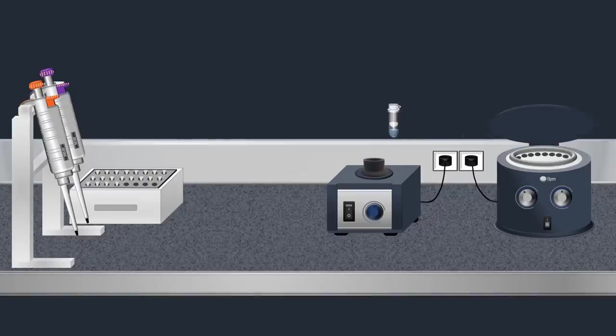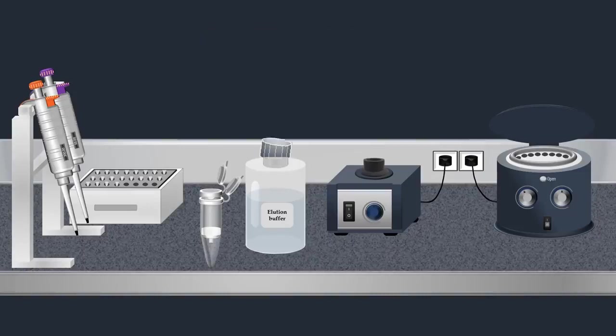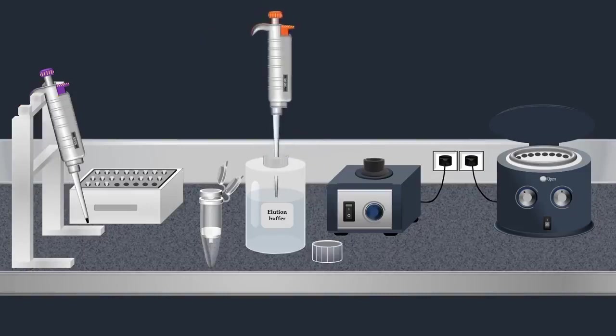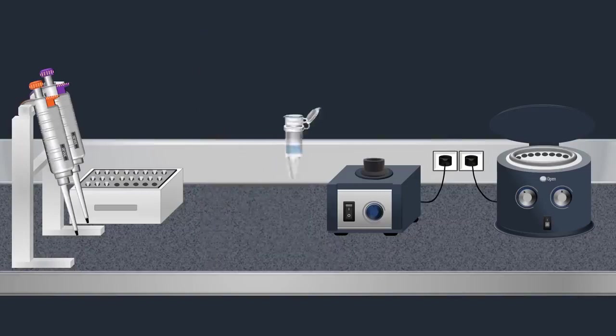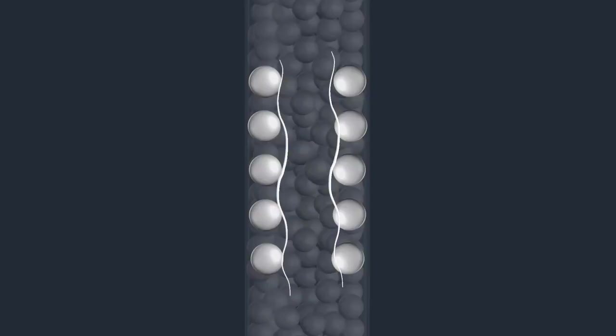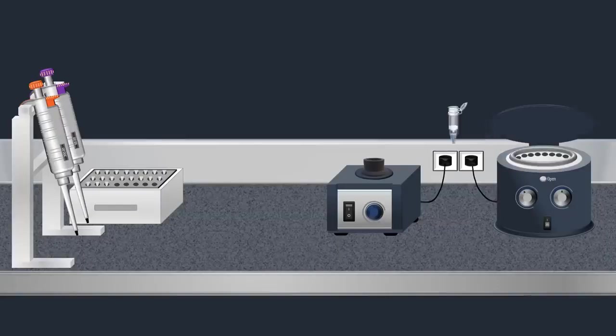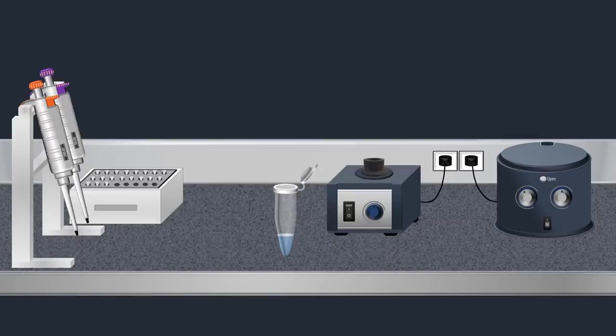Once the sample is washed, the column is placed in a clean microcentrifuge tube and an elution buffer is added. Then, centrifugation is carried out, forcing the elution buffer through the membrane. The elution buffer removes the viral RNA from the spin column, and purified RNA which is free of protein, inhibitors, and other contaminants is obtained.